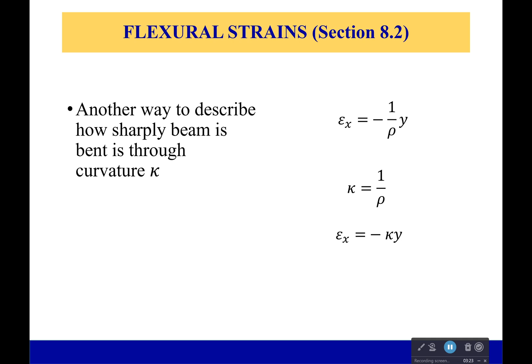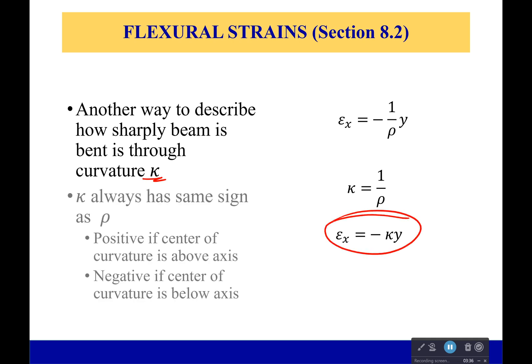Now if we want to, we can also describe how sharply a beam has bent through the curvature kappa, and it is simply the inverse of the radius. It makes our equation look a little bit nicer right here, and it always has the same sign as our radius of curvature. So it's positive if the center of curvature is above the axis and negative if the center of curvature is below the axis.